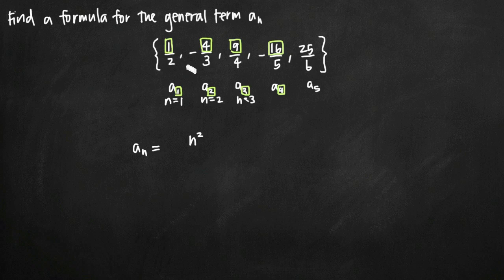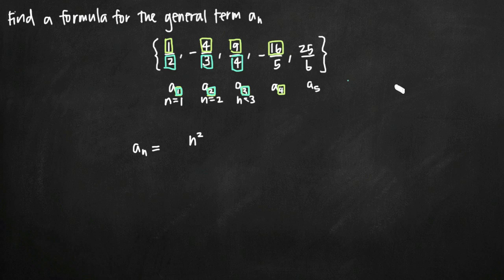Now we deal with the denominator. Looking at the first term, n is one and the denominator is two — one greater. In the second term, n is two and the denominator is three — still one greater. In the third term, n is three and the denominator is four. The denominator is always n plus one.